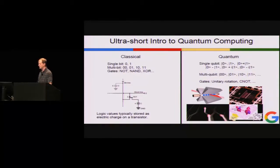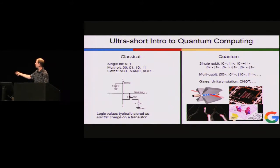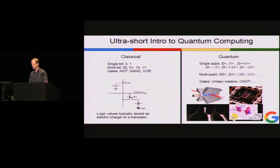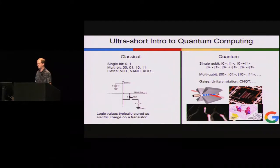I'm going to give you maybe the shortest introduction to quantum computing ever. The difference between quantum and classical computing is illustrated here. In classical computing we have bits, exponentially many combinations as you increase the number of bits, and the standard gates you learned about in undergraduate classes. For logic rather than long-term storage, data is universally stored in the voltage or charge on a transistor circuit — this shows a DRAM cell, but there's SRAM and logic gates as well.